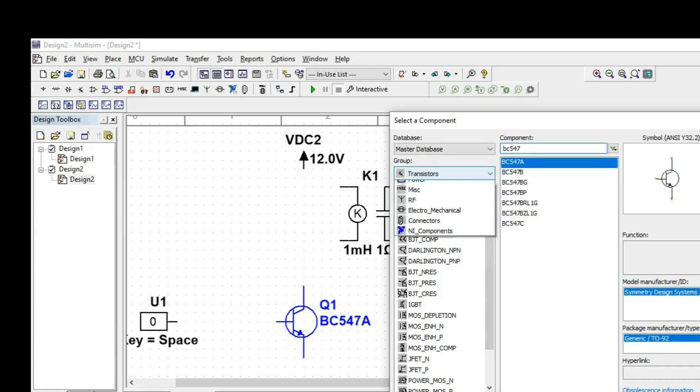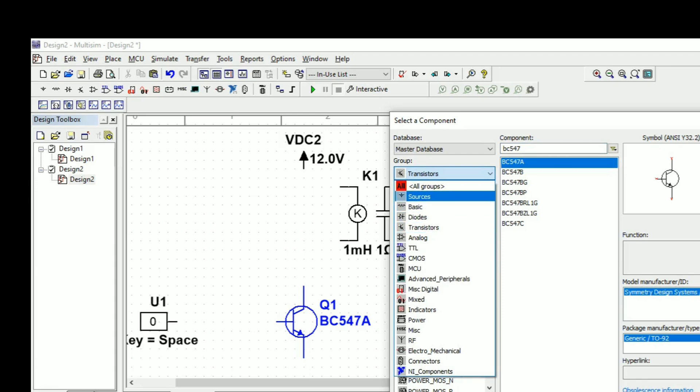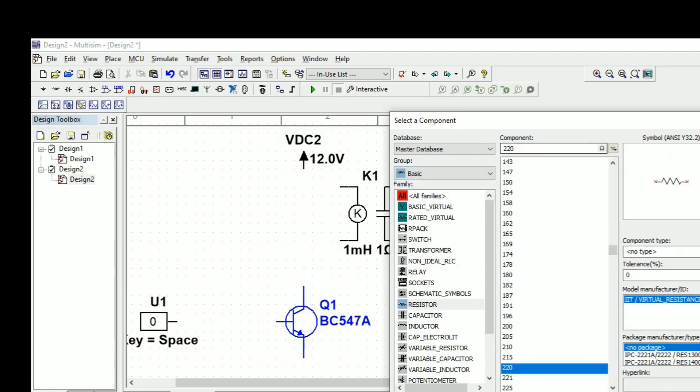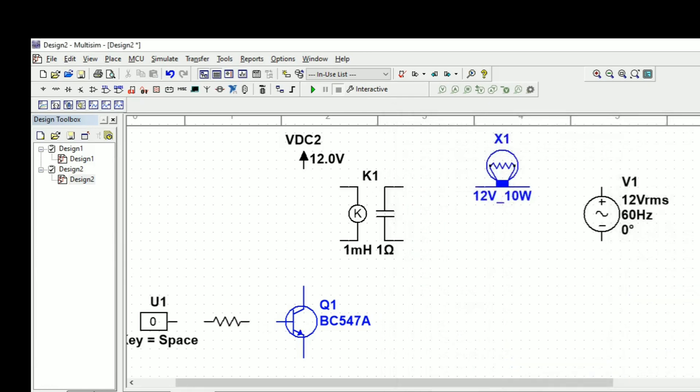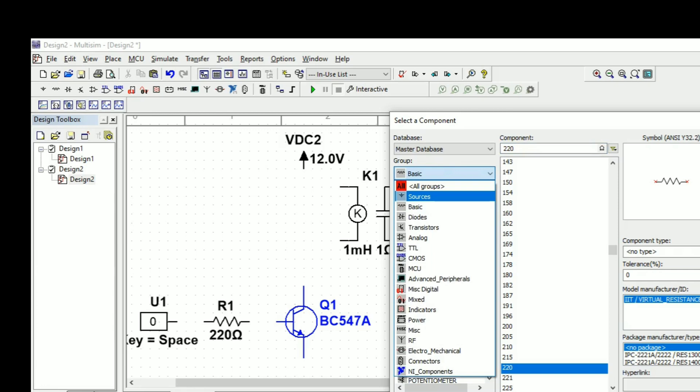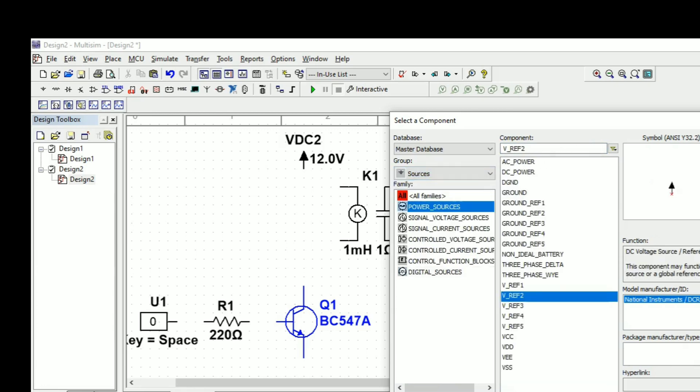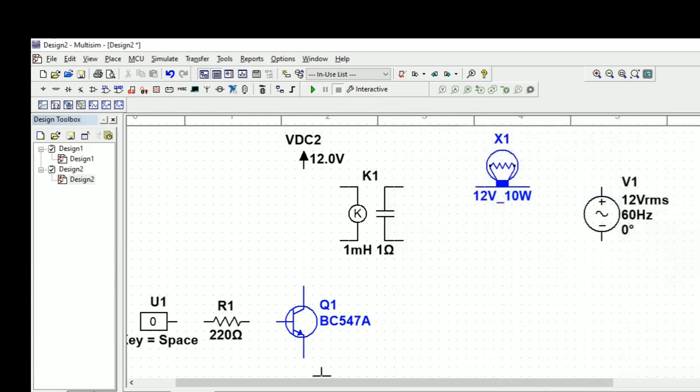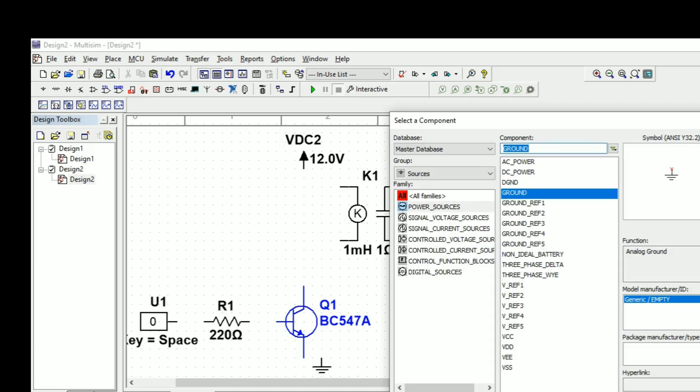In between this digital input and the transistor we must add some resistor. That resistor is here, we will take a 220 ohm resistor.